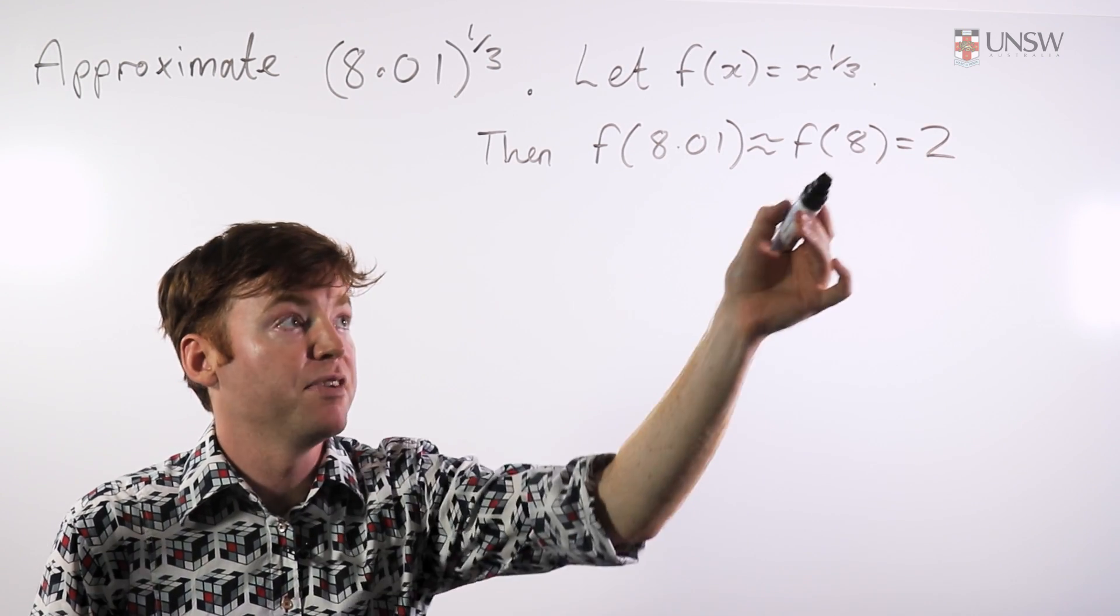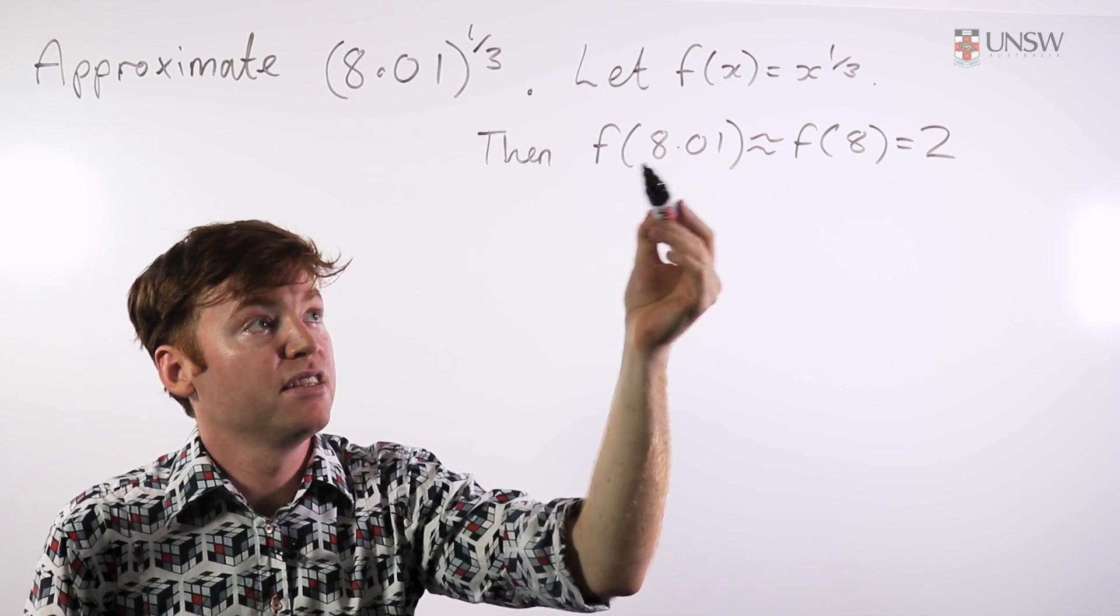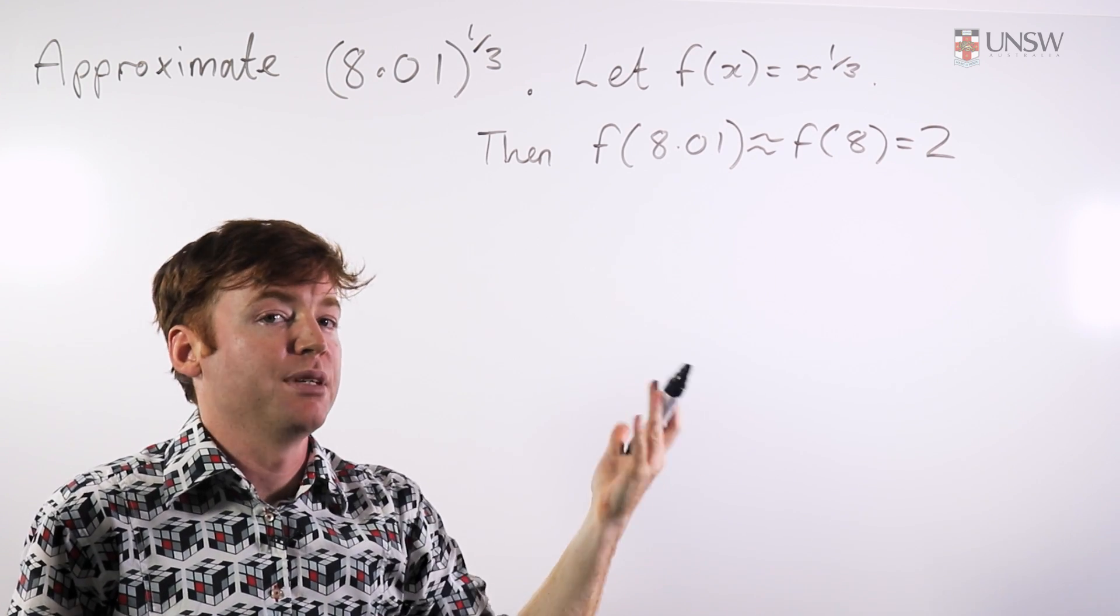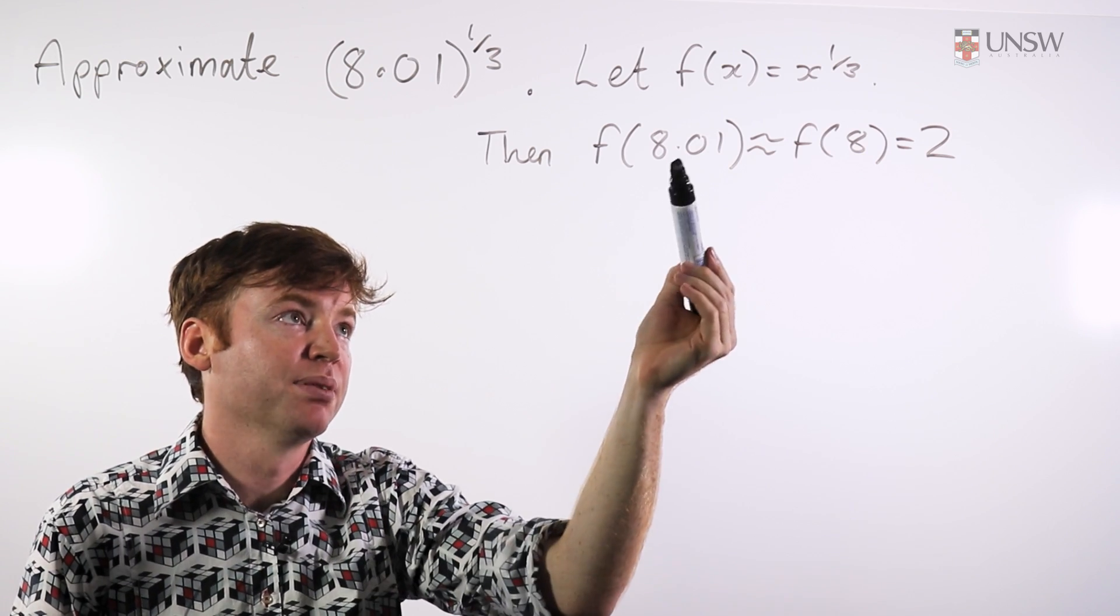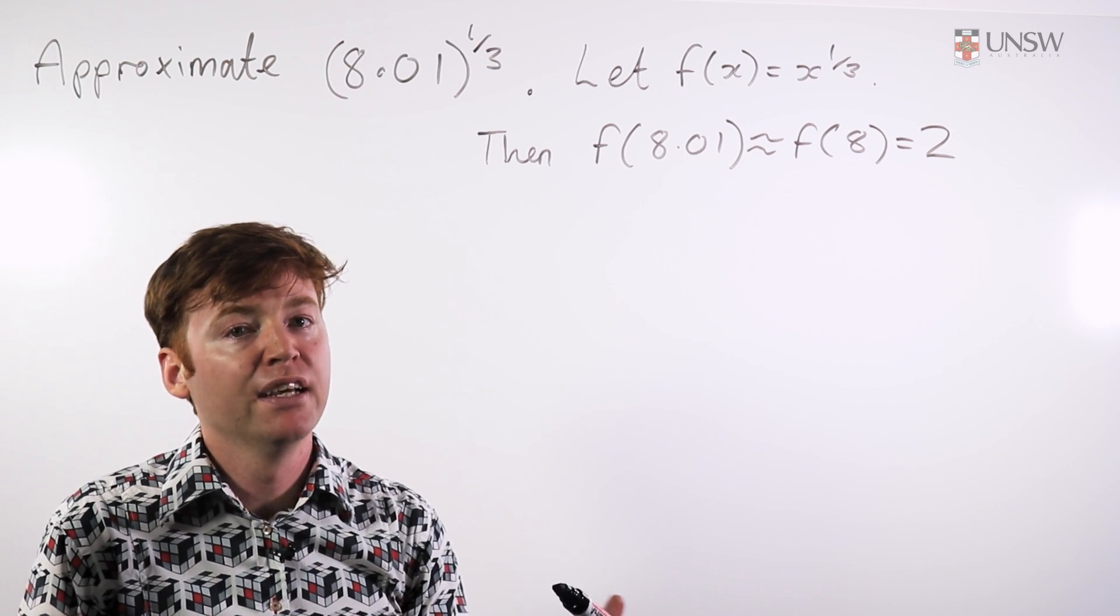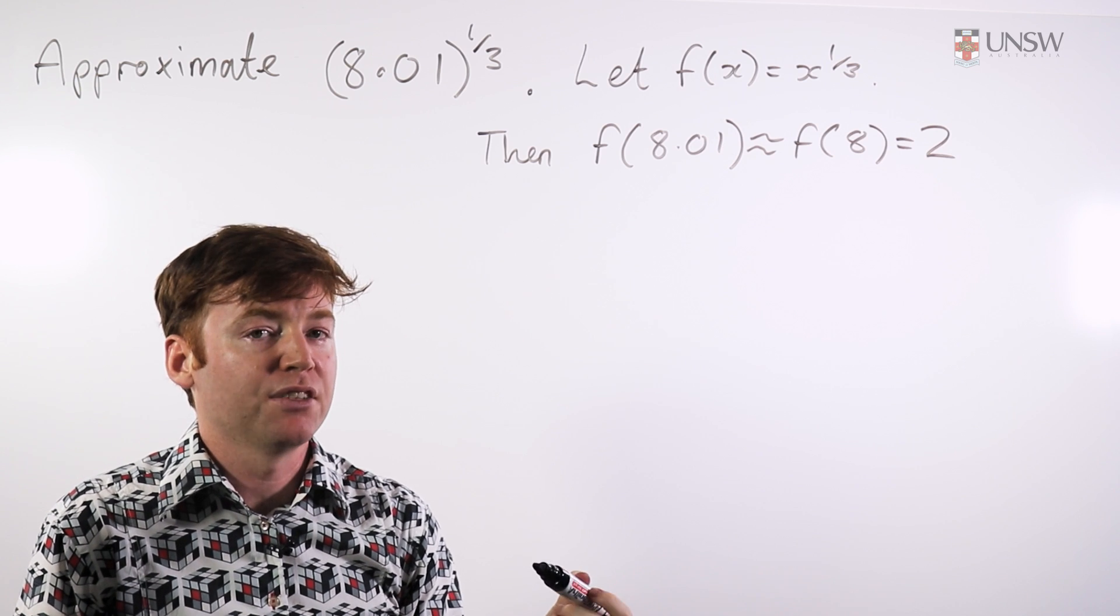Because 2 cubed is 8, then f of 8 is just 2. So whatever this thing is, we're expecting it to be about 2. This is a very rough approximation; we're ignoring completely that 0.01 term there. We're just saying it should be something like 2.